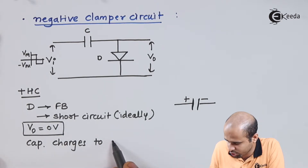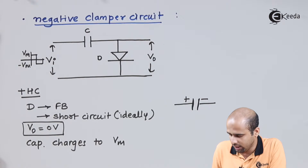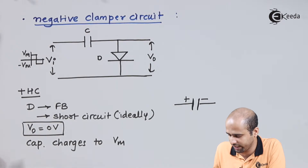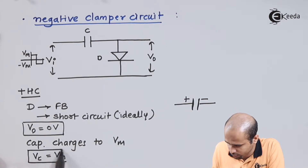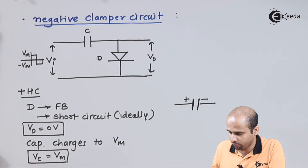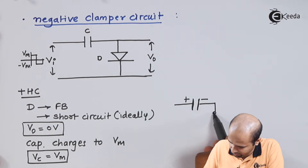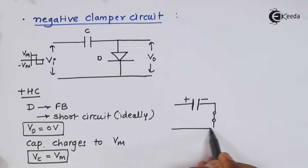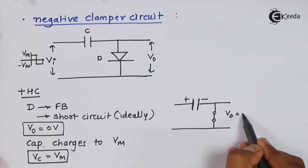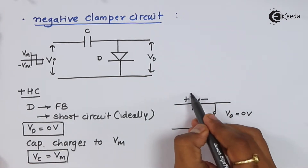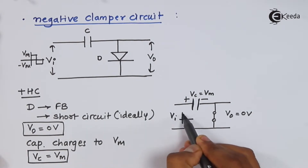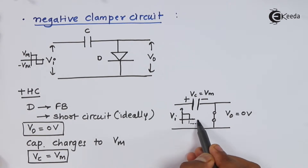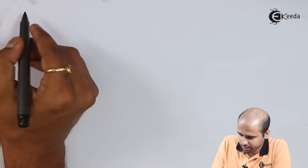The capacitor charges to Vm. Just before the negative half cycle, Vc is equal to Vm. With the diode ideally short circuited, we get Vo equal to 0 volt and Vc equal to Vm. Now let us move to the next step of operation, that is the negative half cycle.